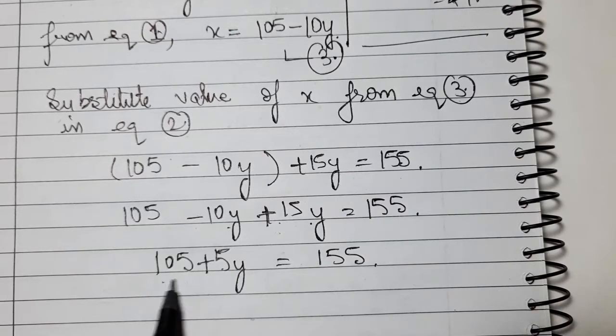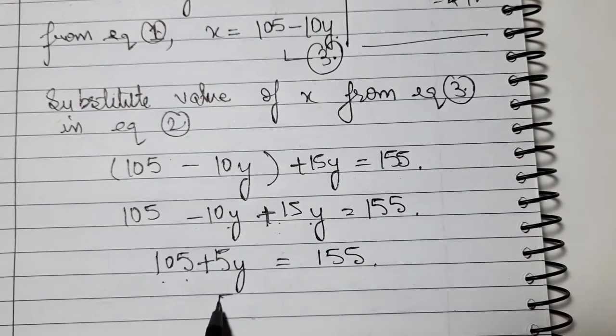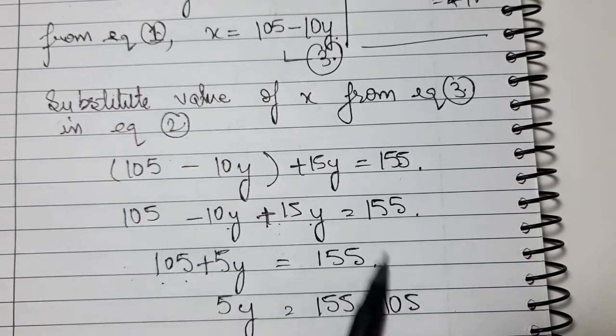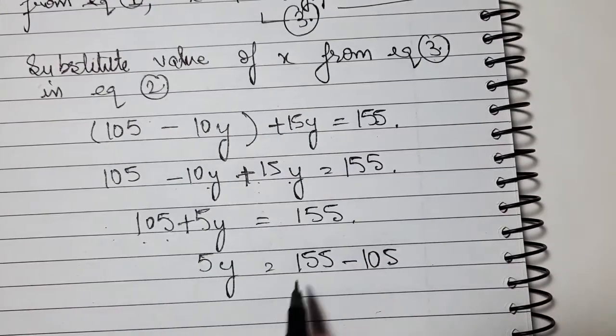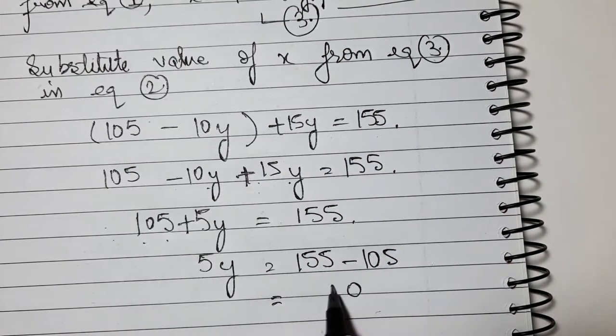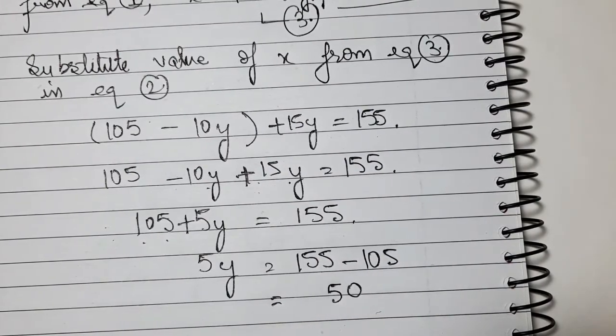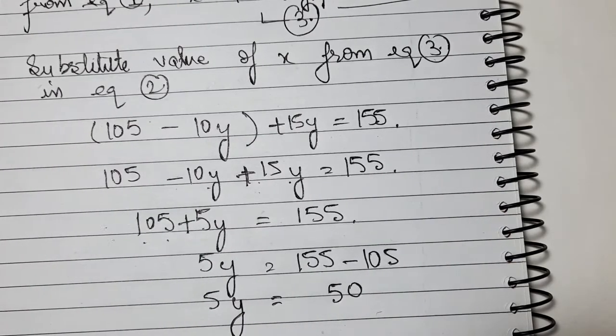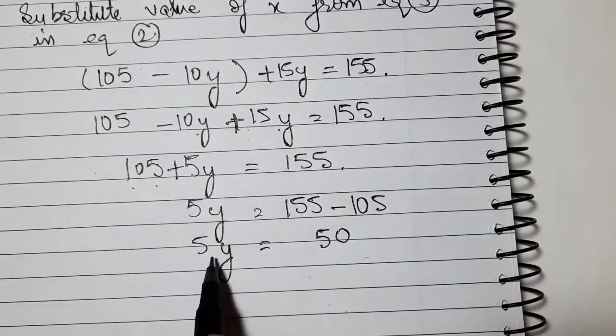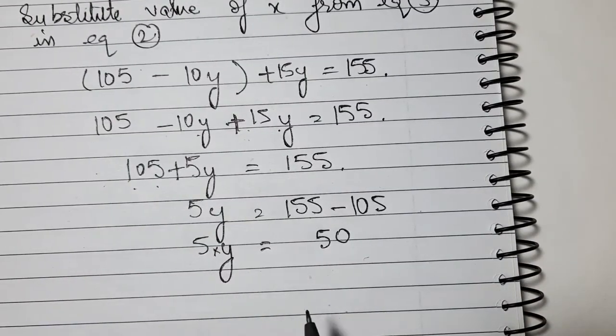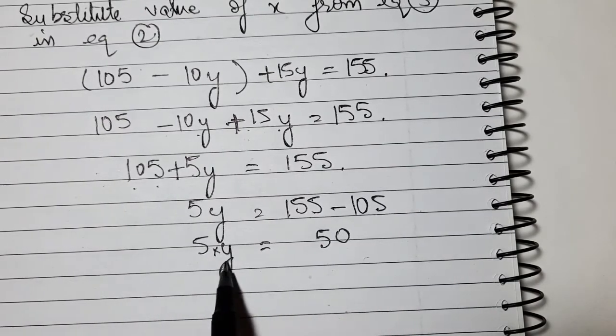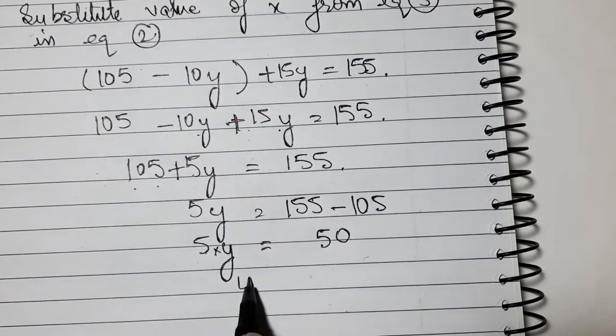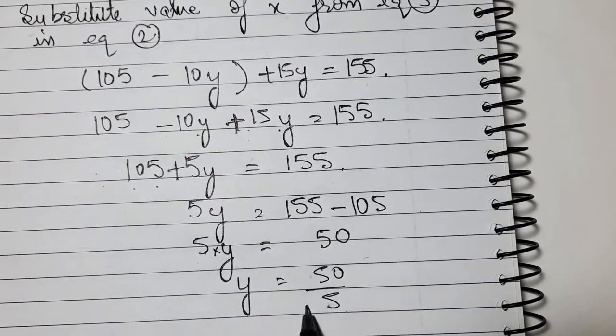Now 105 will shift to the other side. So 5y equals 155 minus 105. That gives 5y equals 50, so y equals 10.